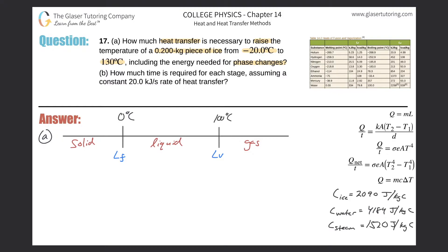This provides a picture of how to calculate heat transfer requirements going from one temperature to another. We are starting at negative 20 degrees Celsius and we have to go all the way into the gaseous phase, ending up at 130 degrees Celsius.